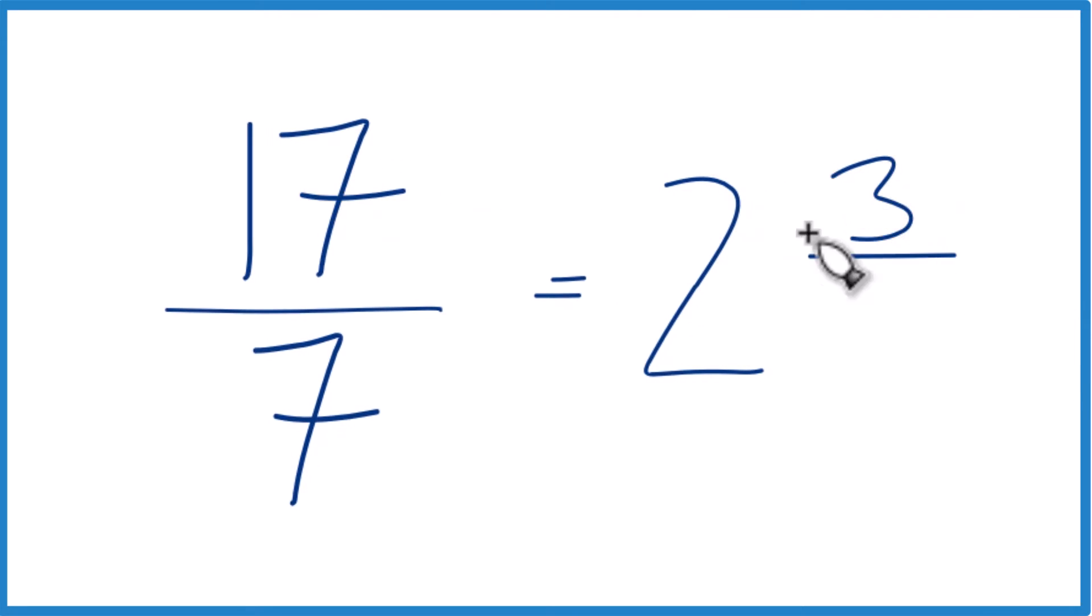That's our remainder. So we put that in the numerator, and we just bring the 7 across. That's our denominator. So 17 sevenths, the improper fraction, that equals the mixed number 2 and 3 sevenths.